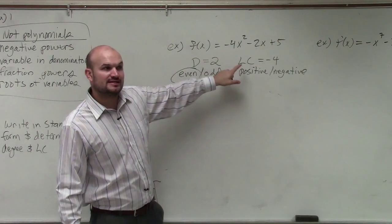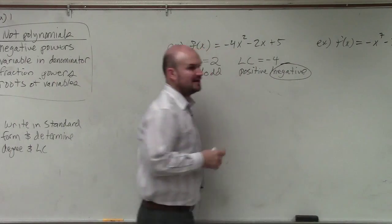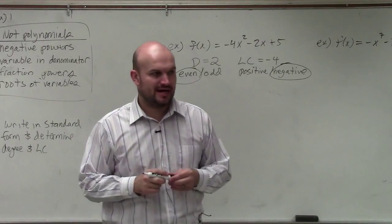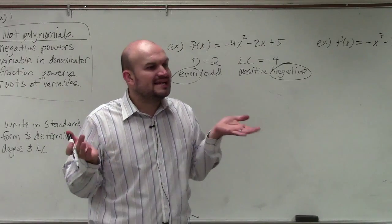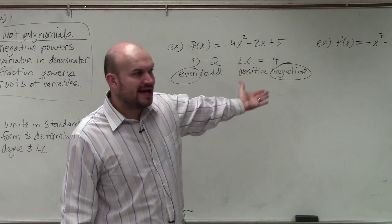Leading coefficient is negative 4, positive or negative. It's pretty obvious, right? That's negative. So then, we go to our little table that we looked at, and we say, all right, what is the end behavior then when the graph is even and has a negative?